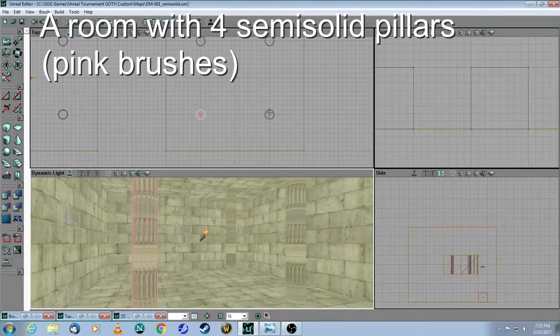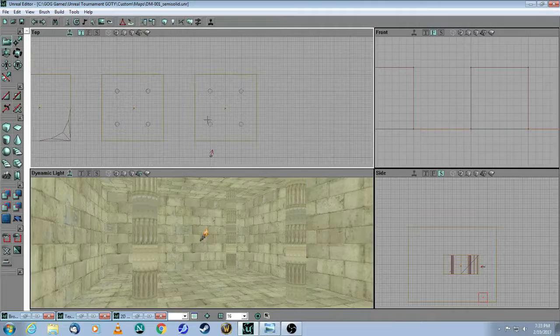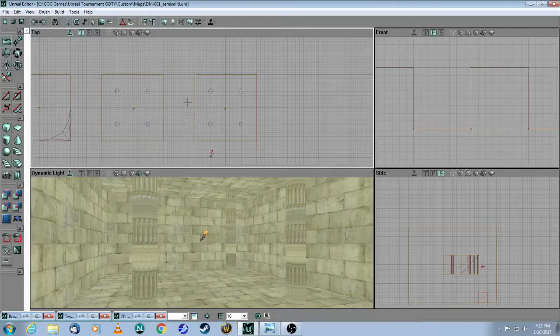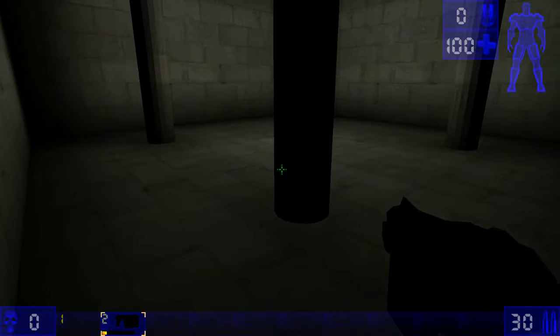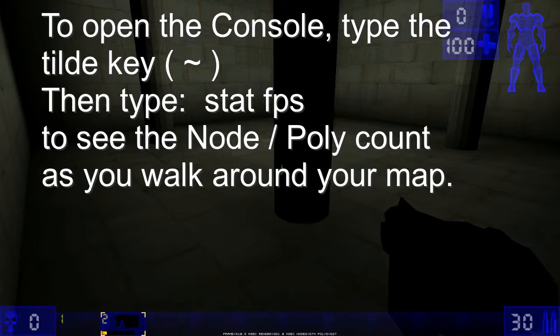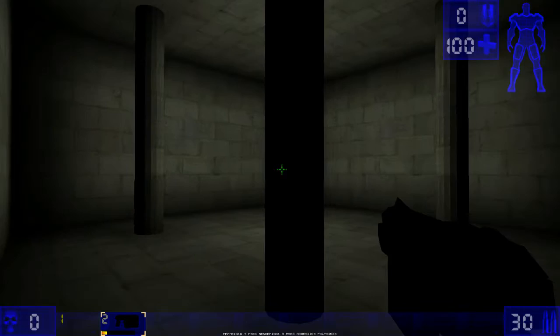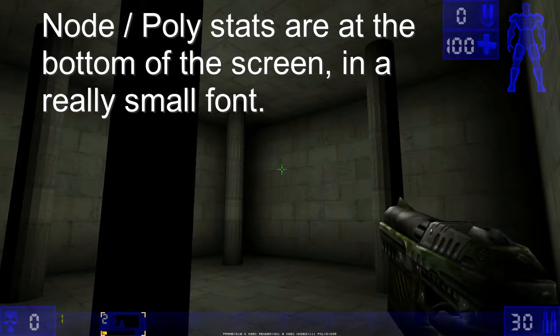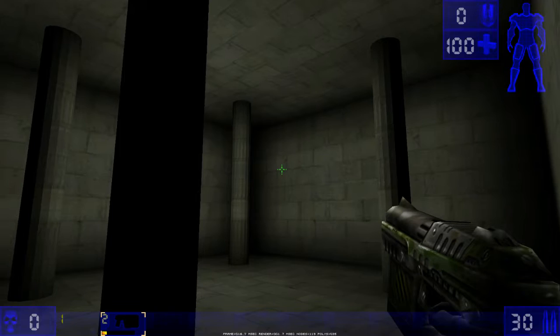So, remember now, to the player, there's no difference. But, let's go into the game, and take a look at the statistics. Here's the room where I added the four pillars. So, if I just move over a little bit so you can see everything. You can see how it jumps pretty high. There are approximately 120 nodes, and about 35 polys.